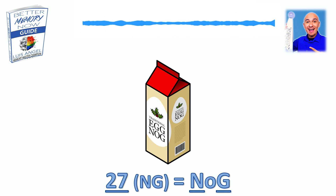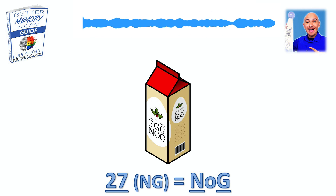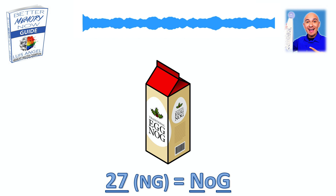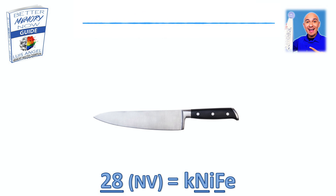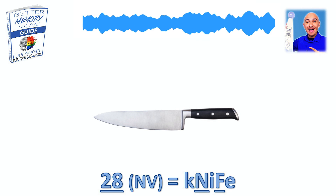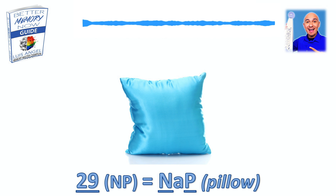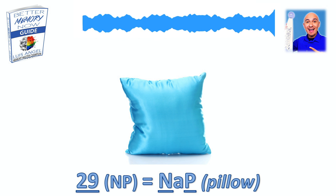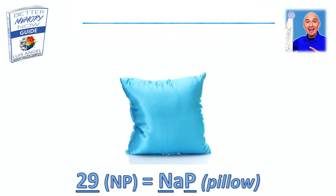Almost done. 27 is Nog — egg nog, to be exact. 2 is an N sound, 7 is a K sound, harder G. I picture egg nog for 27. 28 is knife — N, F. Picture that on your fibula, maybe cutting up your shin area with the knife. And last but not least, 29 is nap — N-A-P. 2 is an N, 9 is a P sound. Or I picture a pillow for that one. Pillow for nap.